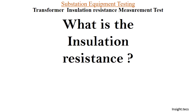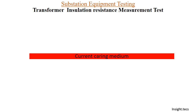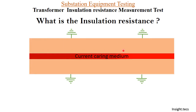Let us understand what insulation resistance is and how to measure it for any equipment. Let us assume there is a current carrying medium — it can be any conductor carrying a current. Between this current carrying medium and earth, there has to be some resistance so that current will not flow directly from the current carrying medium to earth. This resistance can be in the form of any medium or material.